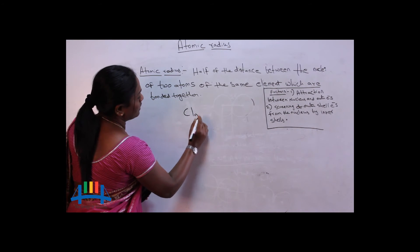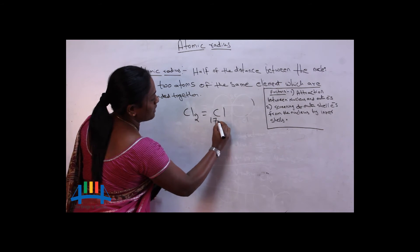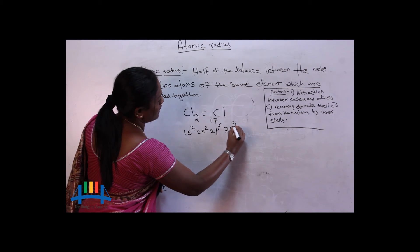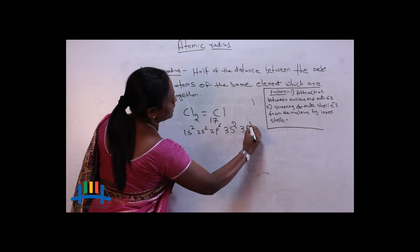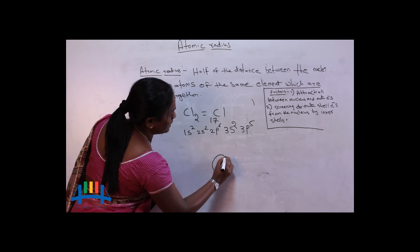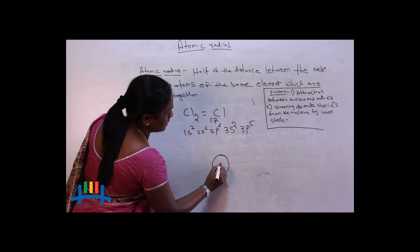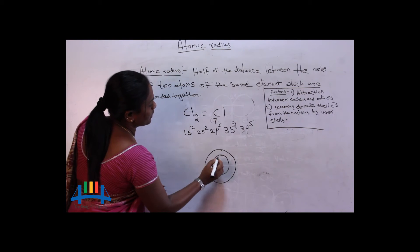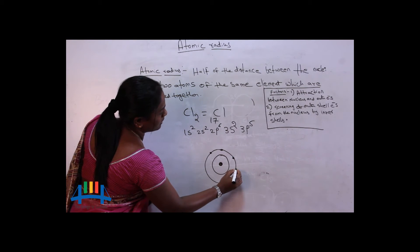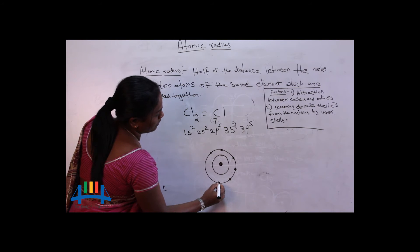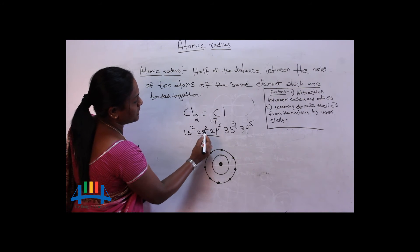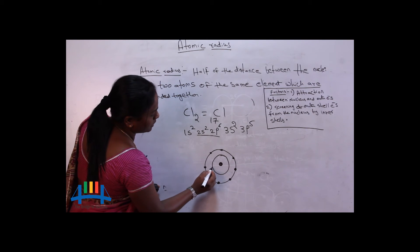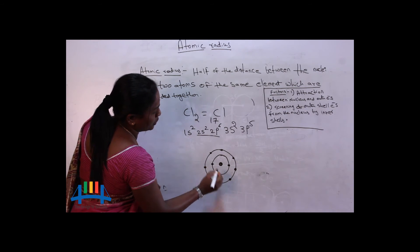Take a chlorine atom with atomic number 17. Its electron configuration is 1s², 2s², 2p⁶, 3s², 3p⁵ — total 17 electrons. Drawing the diagram: this is the nucleus, then the first shell with 2 electrons, the second shell with 2 + 6 = 8 electrons, and the third shell with 7 electrons.